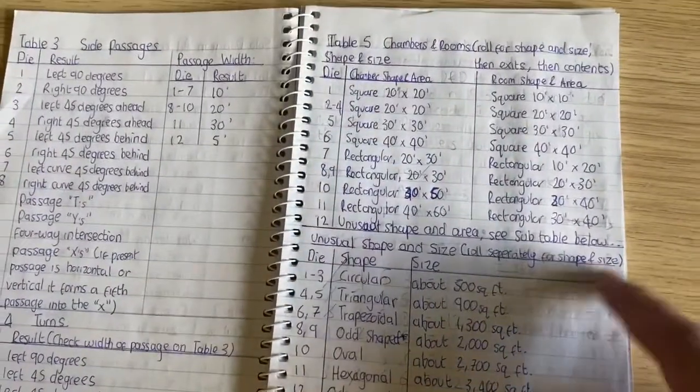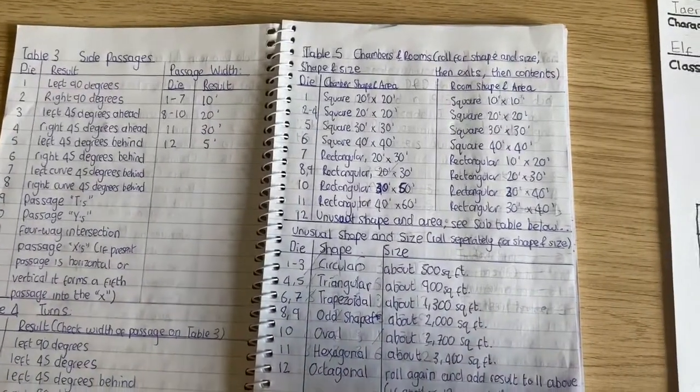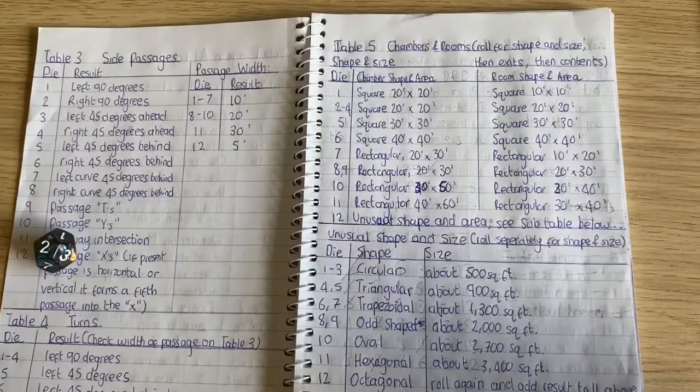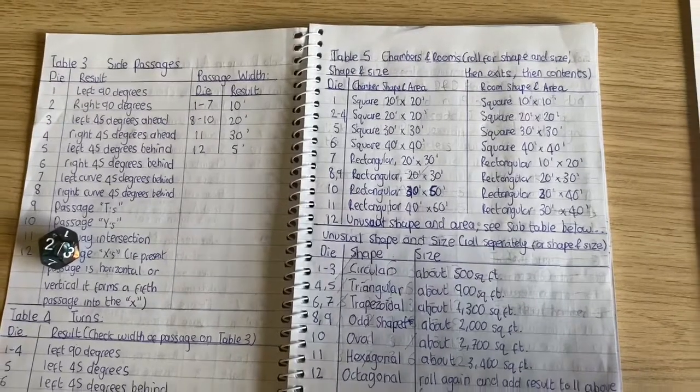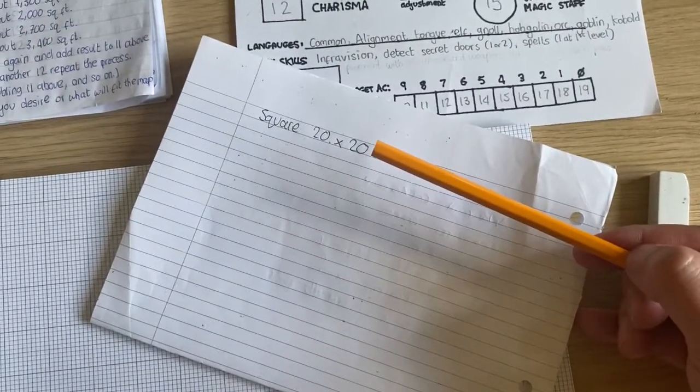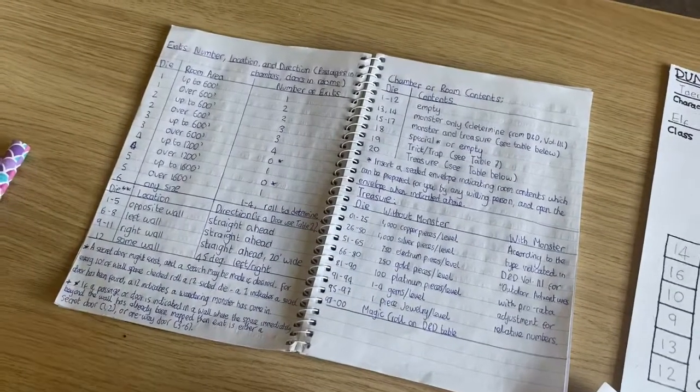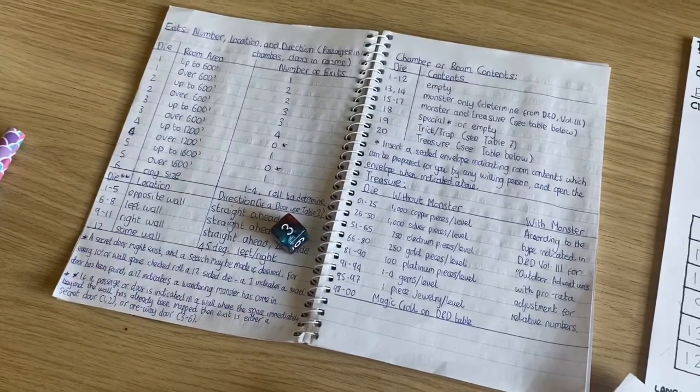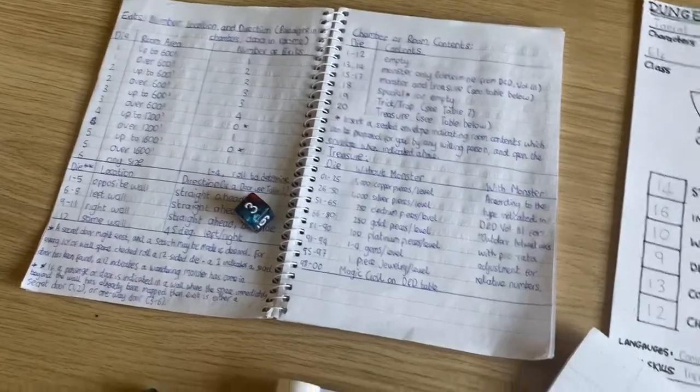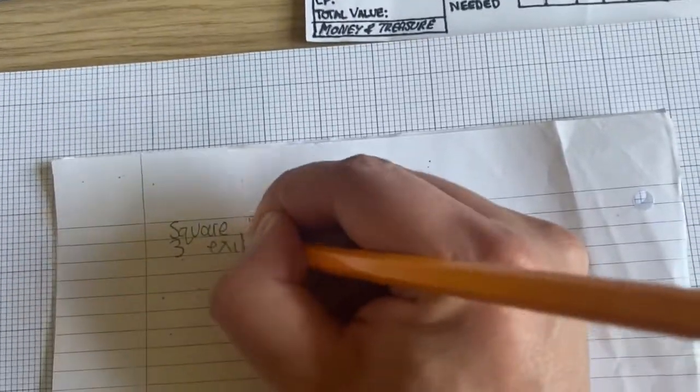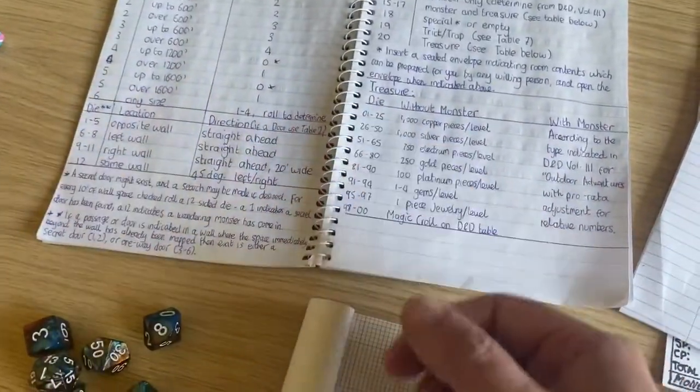So I'm going to bring up table 5 of the Solo Dungeon Adventures and roll my first room of the dungeon using a 12 sided dice, and I got a 2. That's a square, 20 times 20 room. Next we roll a 6 sided die to see how many exits are in the room, and we rolled a 3. So on a roll of 3, we have 3 exits. So we've got a square, 20 by 20 foot room with 3 exits.